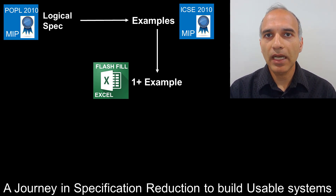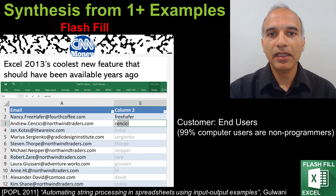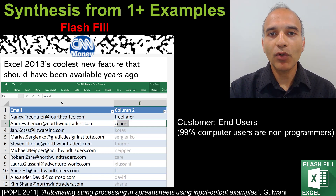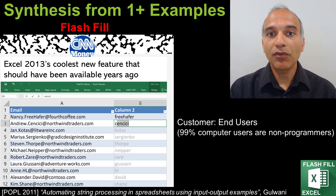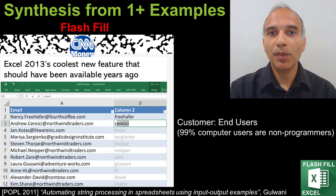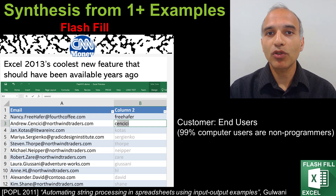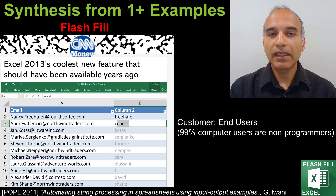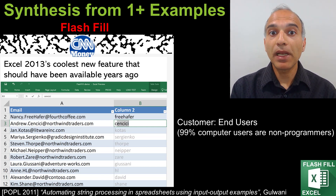But there was a big challenge. To earn the customer's trust, you need to make this thing work with one example for common cases. For instance, suppose you have a bunch of strings in the form first name dot last name at domain, and you want to extract the last name. 99% of spreadsheet users do not know programming and would struggle with such a task, but can easily specify what they want using examples. The Excel team told me this is cool, but you can't ship this unless you make it work with one example in most common cases. So that's what I did. And the resulting Flash Fill feature is now one of the most popular features in Excel, with around a million invocations each week.